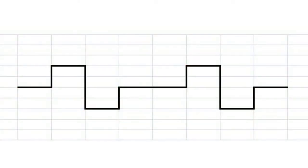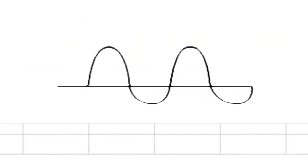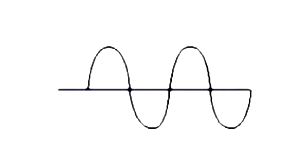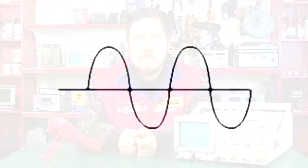The following classification of signals is used in electronics and communication systems. Periodic signals are signals that repeat in certain periods of time t. The value t is called the period of signal f(t).